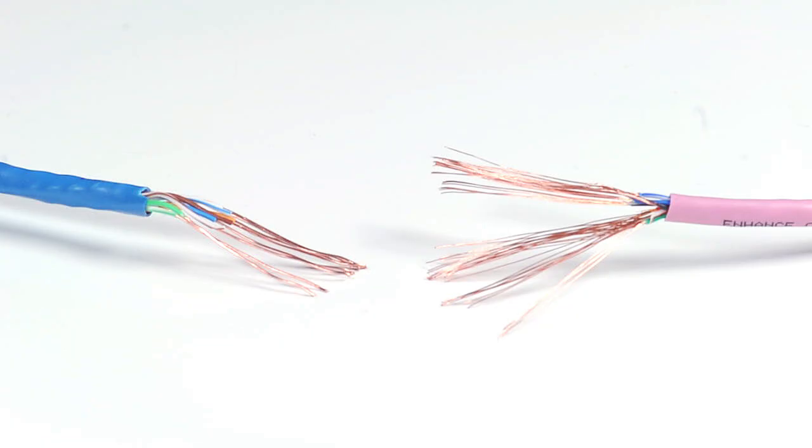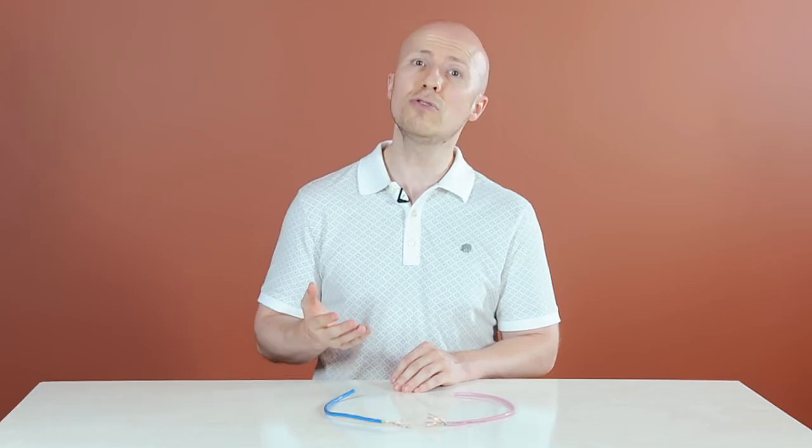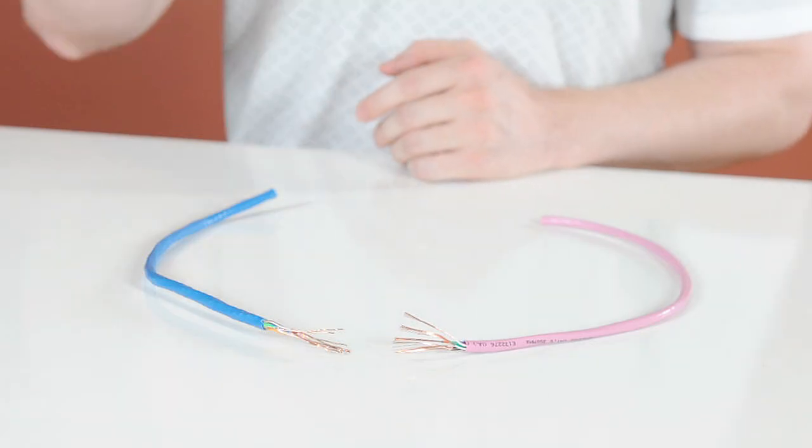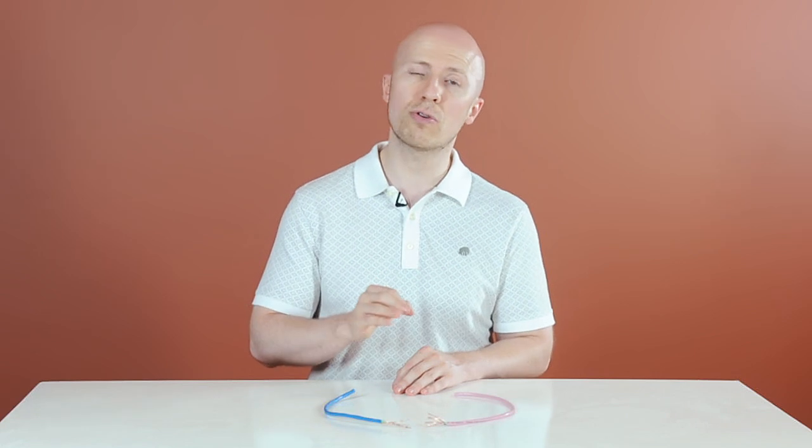It also affects installers as aluminum wire creates installation issues. Due to its lower tensile strength, aluminum cables can be damaged just by pulling on the cable. Single conductors can break making the cable useless, or the whole cable can snap.